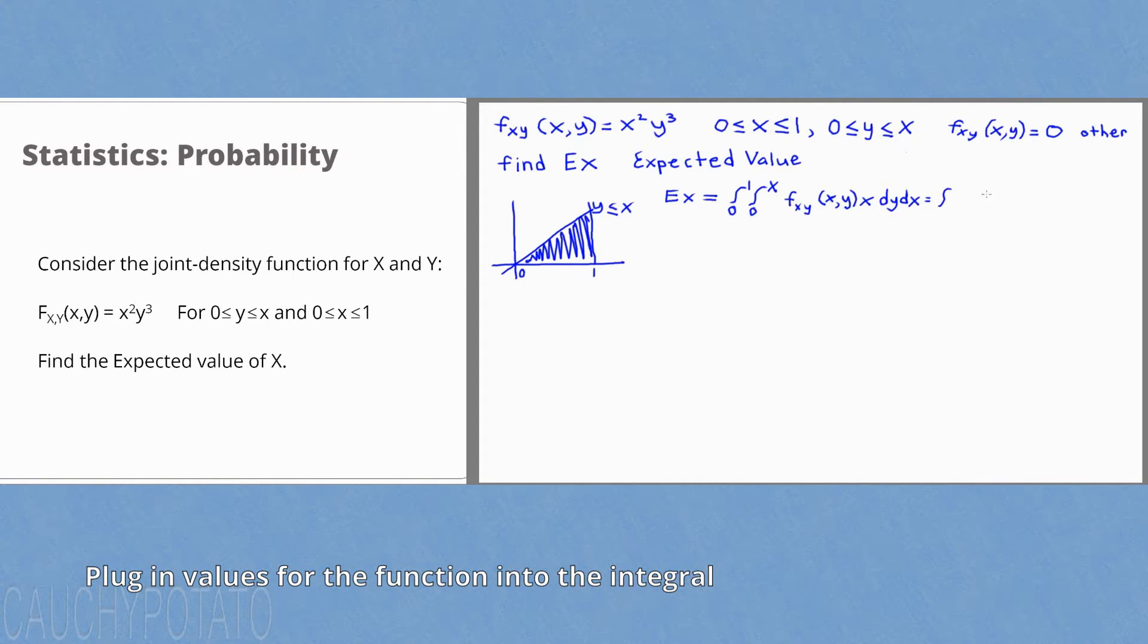Plugging in the function to the integral, we get integral 0 to 1, 0 to x, function x squared times y to the third times x dy dx.